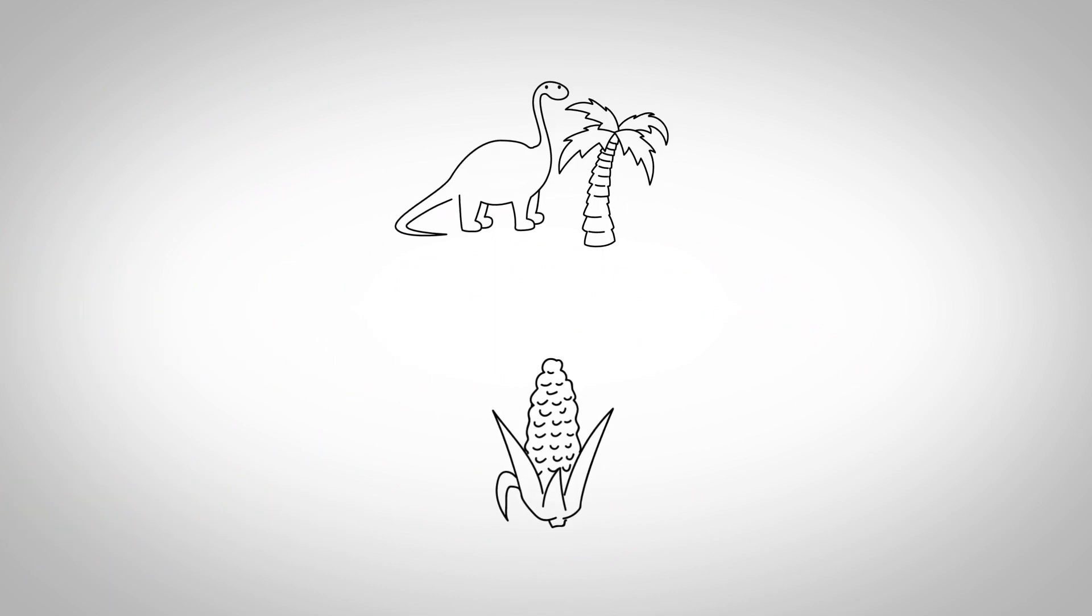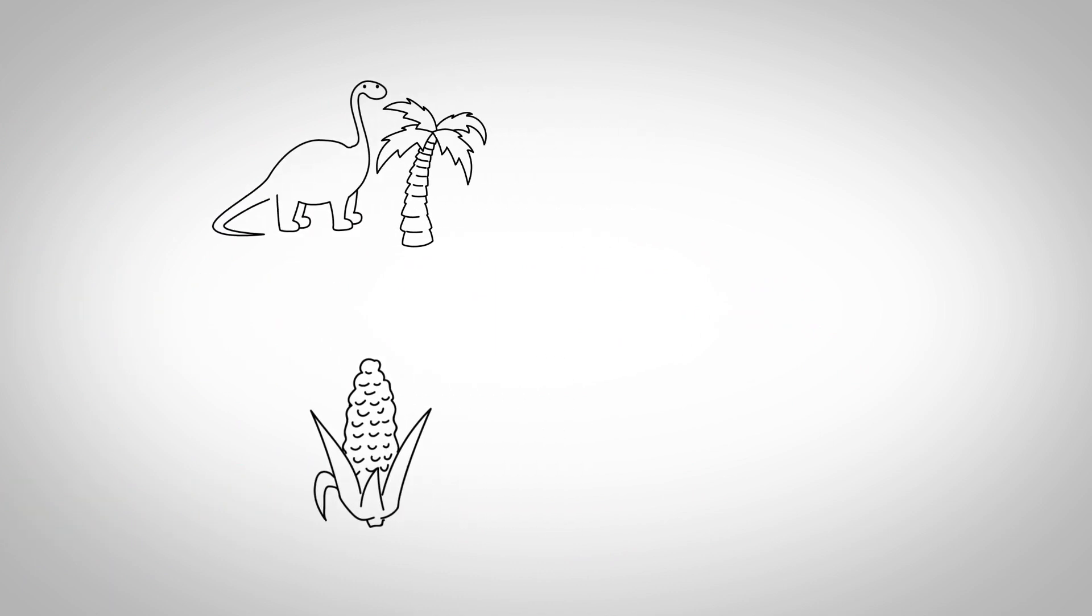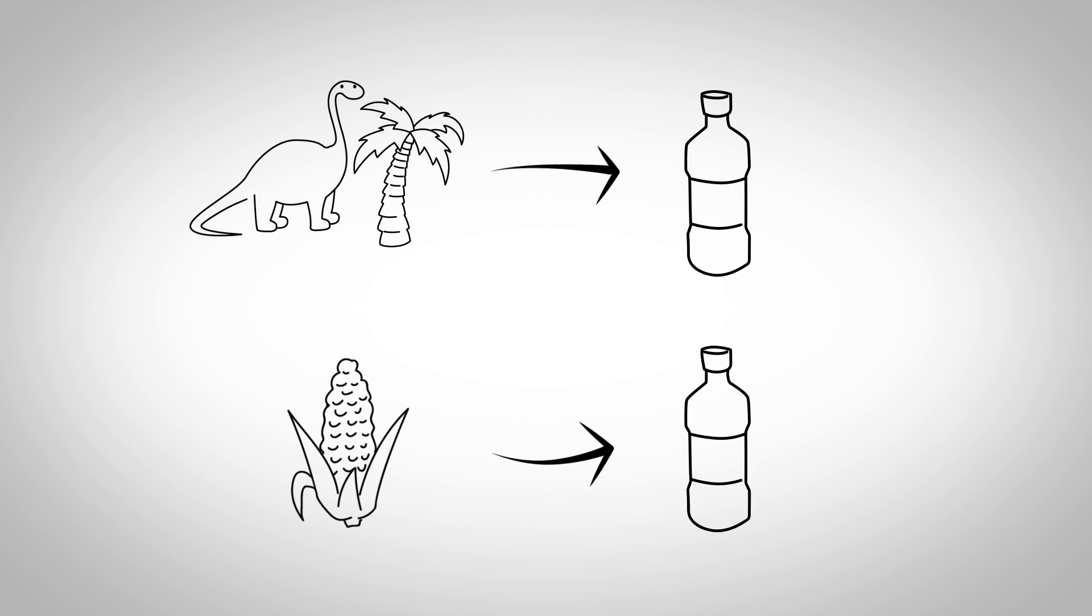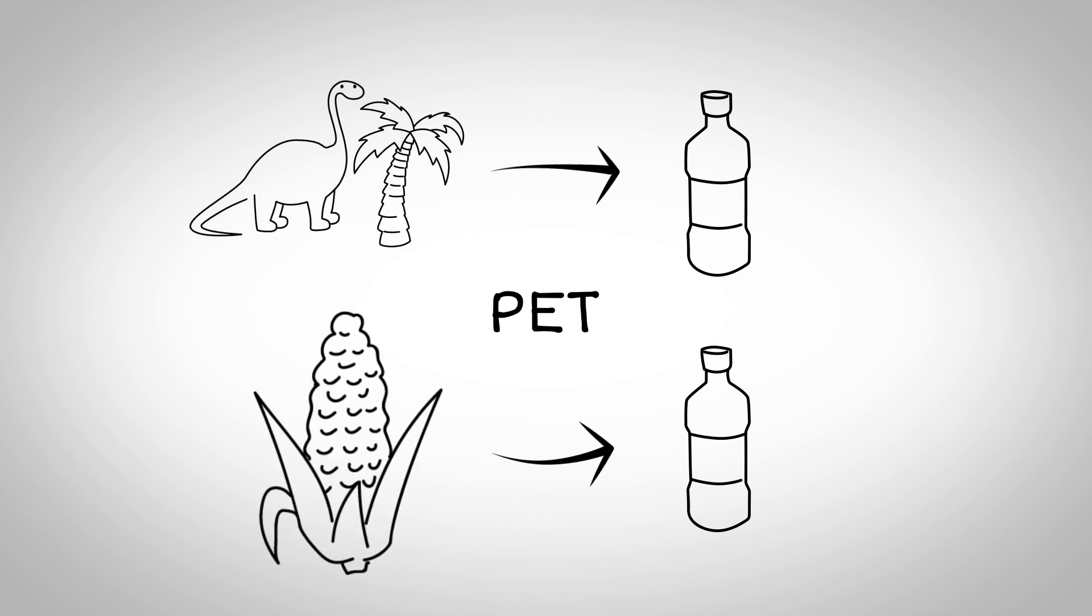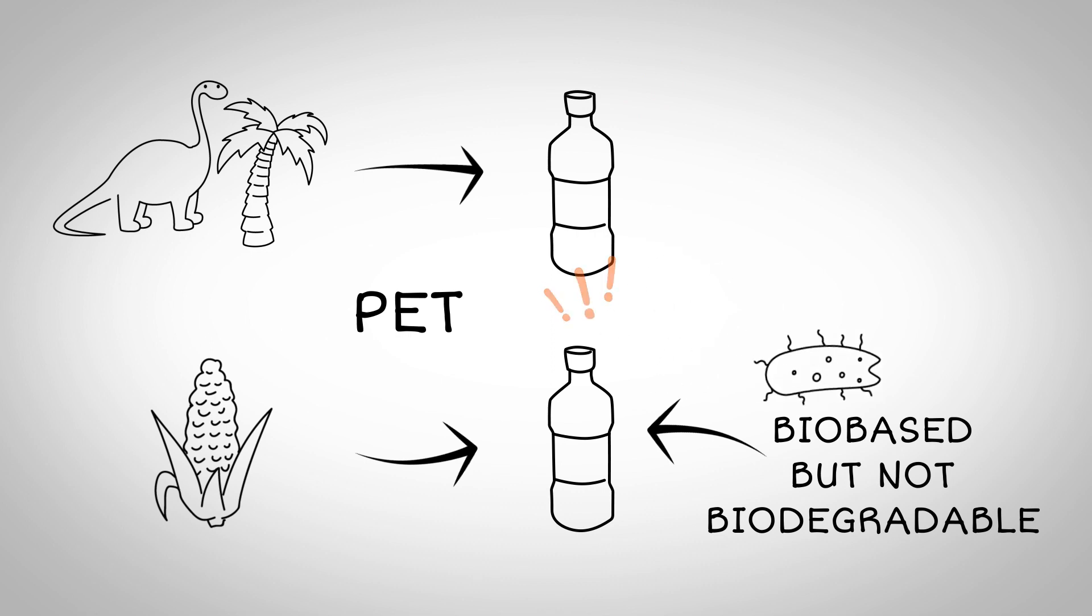Some polymers are never biodegradable. Plastic beverage bottles, for example, are made of a polymer called PET. It can be comprised of either fossil-based or biobased monomers. Both varieties are recyclable, but microbes will not eat either one.